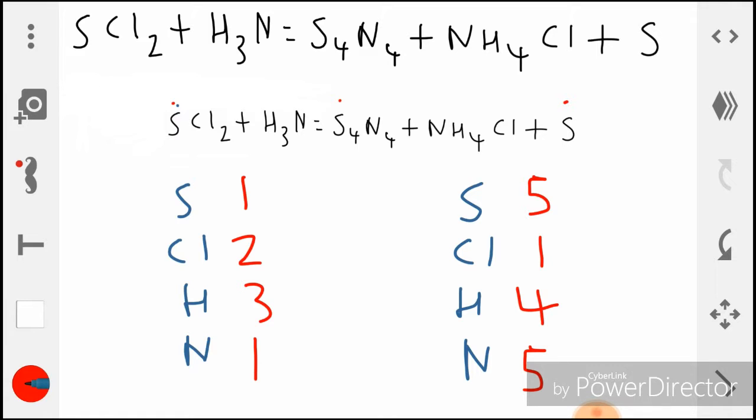So now as you can see they're really not balanced and we need to balance them. How do we get from one here to five here? Well, we can multiply S by five.